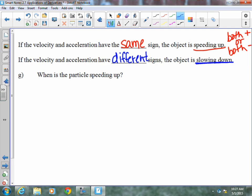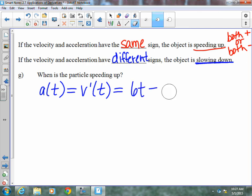This asks, when is the particle speeding up? Well, first of all, we need acceleration, which is equal to v'(t). So, our acceleration is 6t. Because the derivative of the negative 3 is 0. So, 6t.